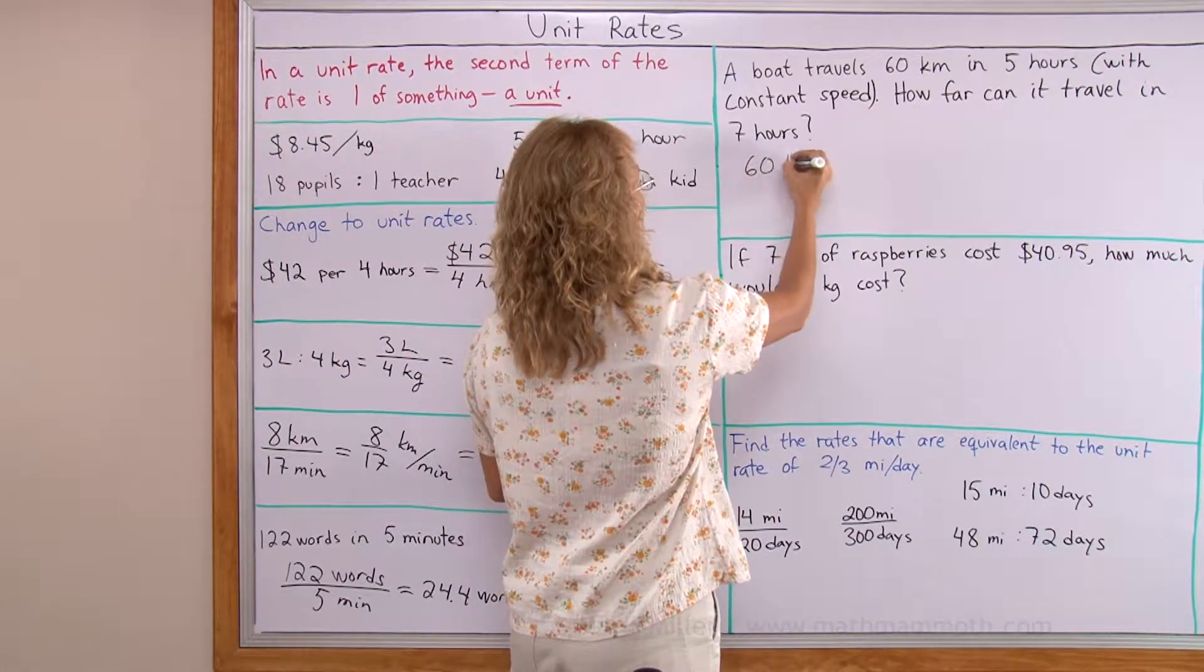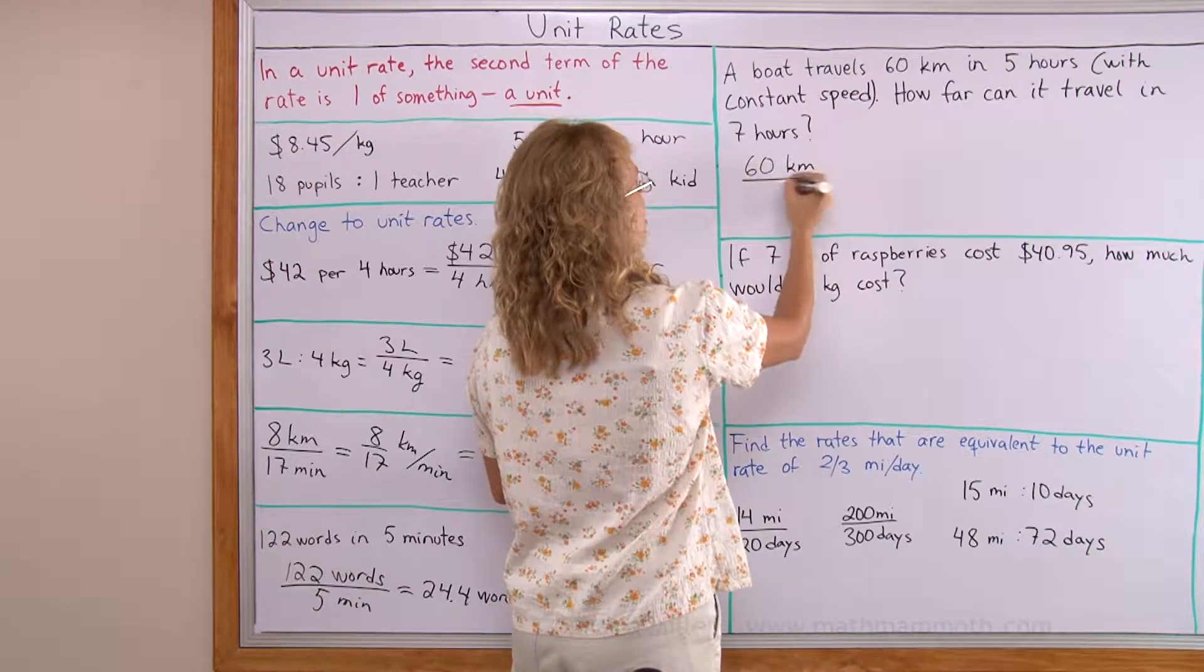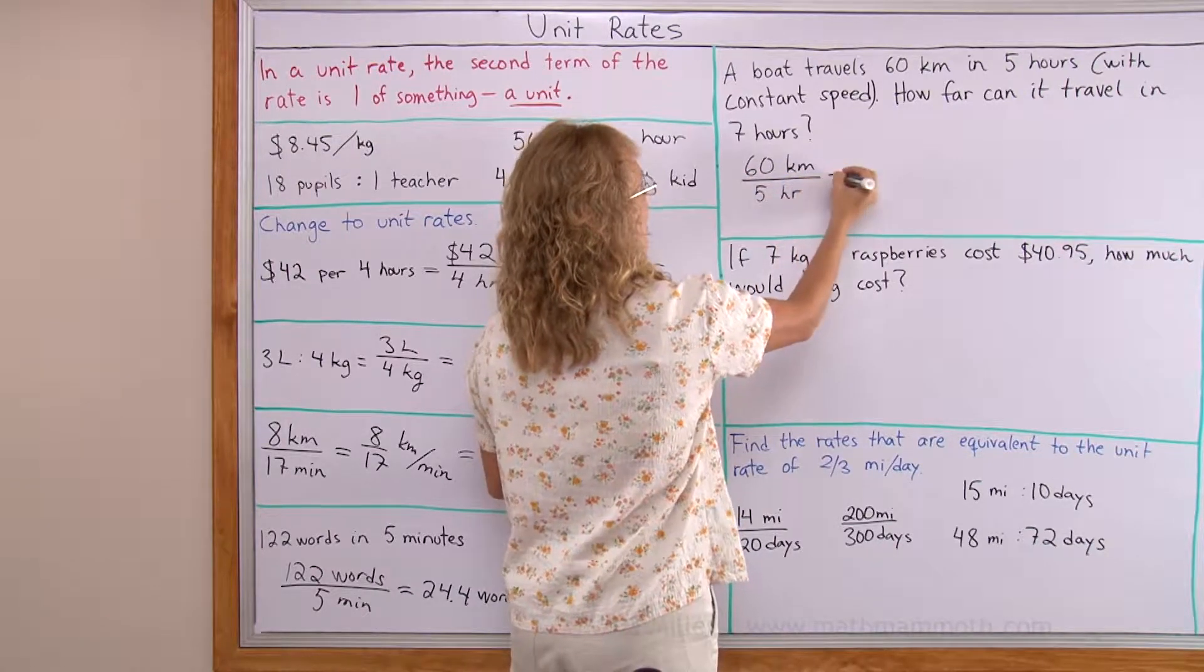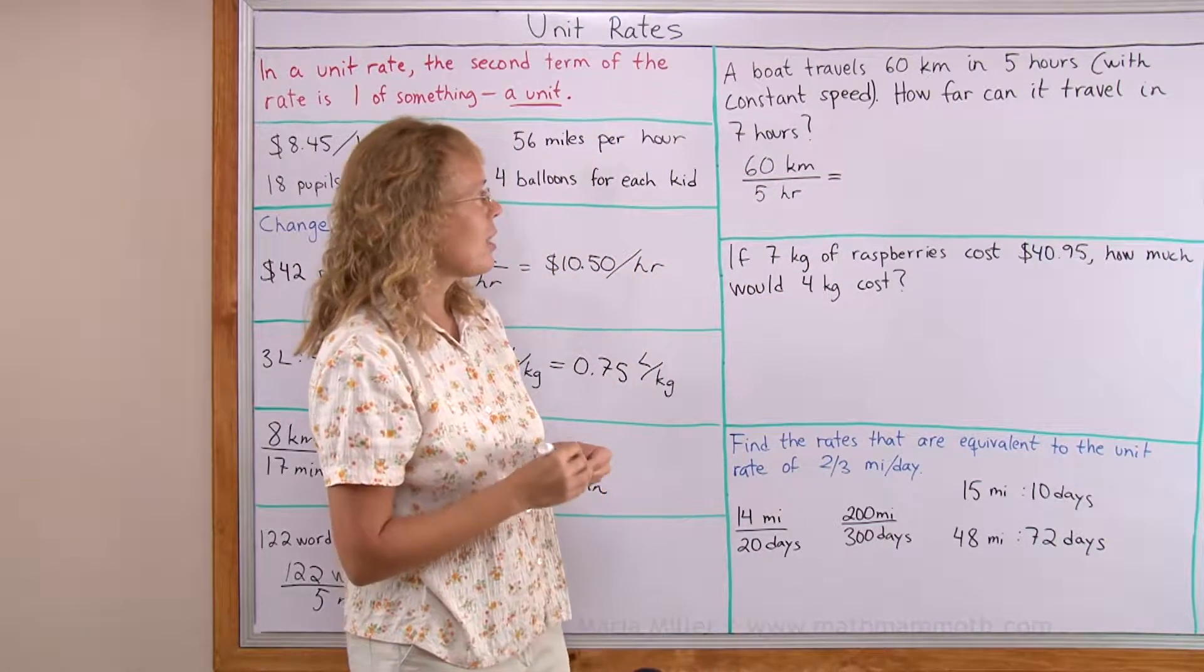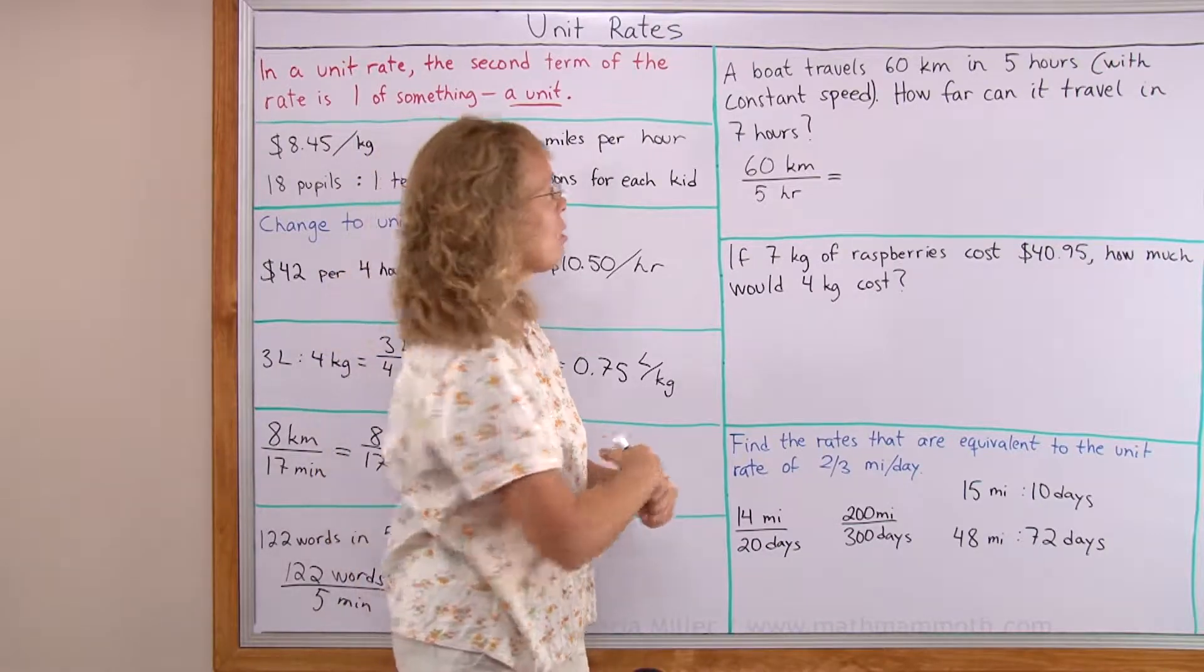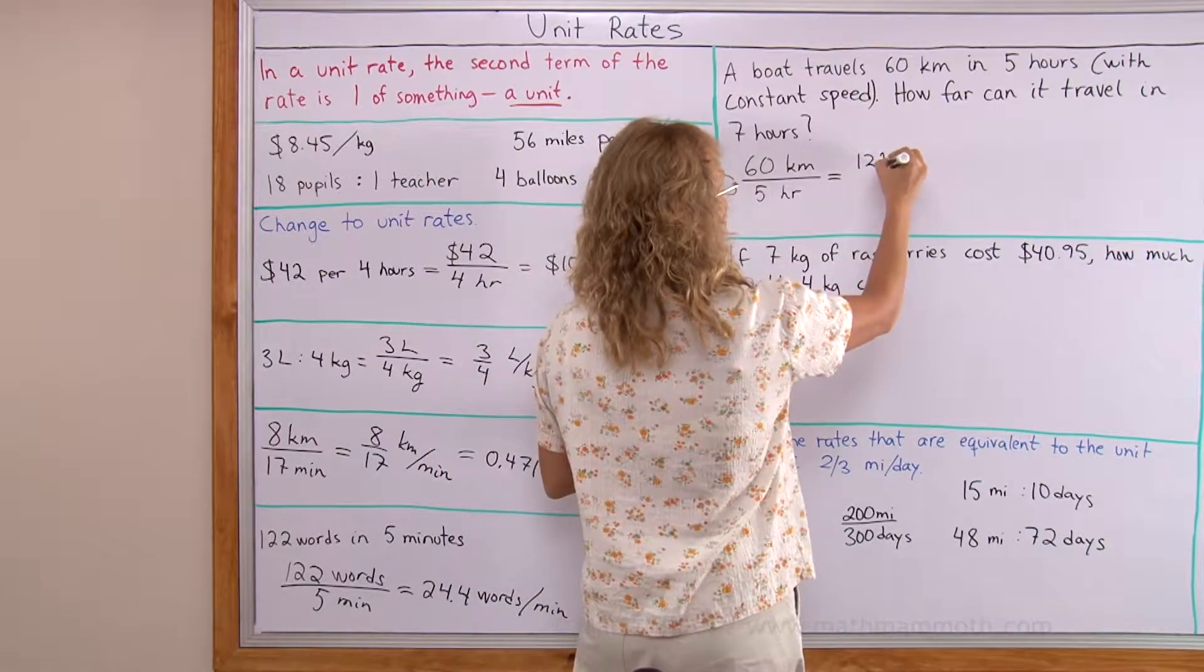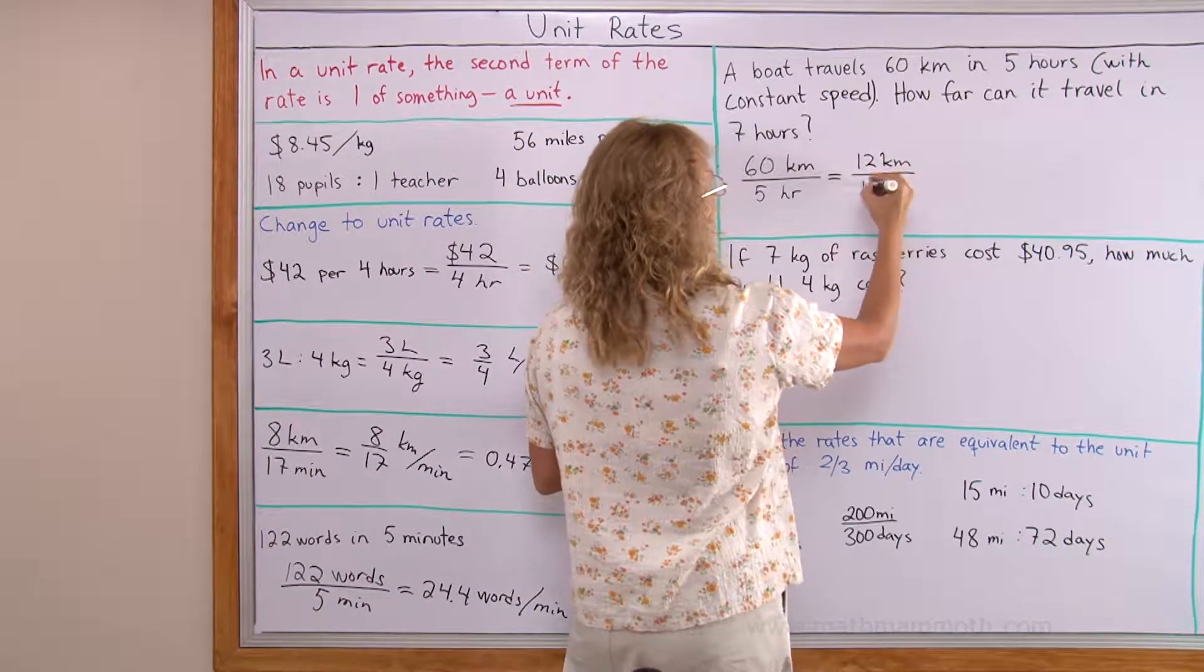But what we can do is we can first find the unit rate for this situation. The rate given is 60 km per 5 hours. Now let me write the unit rate. I divide 60 divided by 5, so I get 12. 12 km per 1 hour.